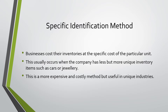The specific identification method is used when businesses cost their inventories at the specific cost of that particular unit. This usually occurs when the company has fewer but more unique inventory items, such as cars or jewelry. This is a more expensive and time-consuming method, but it is useful in unique industries when everything is priced very differently. It wouldn't be fair to assign the same cost to everything when items are also different.